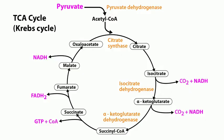For every acetyl-CoA you put into the TCA cycle, you get out one GTP plus electron donors: three NADHs and one FADH2. You also liberate CO2, which goes into the blood and is exhaled by the lungs. Overall, these details aren't all that high-yield for step one.